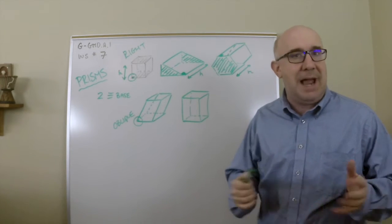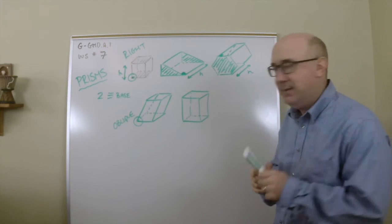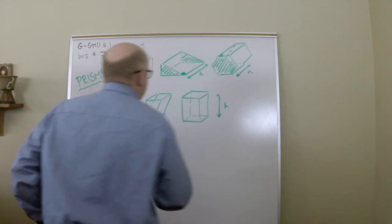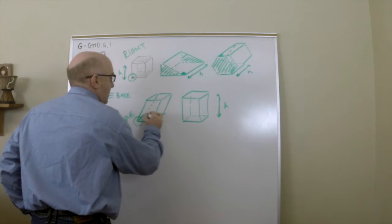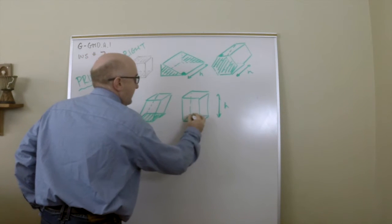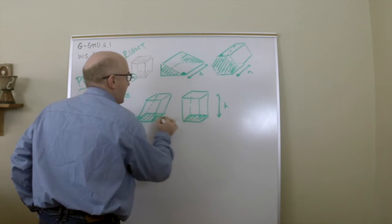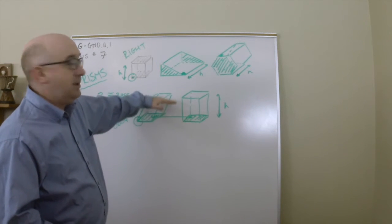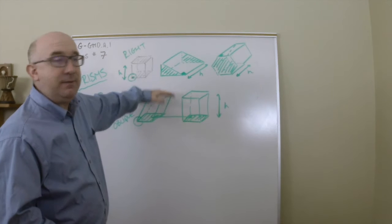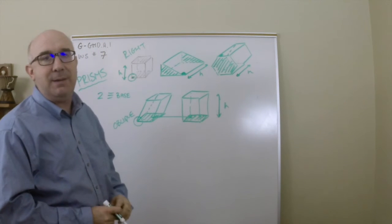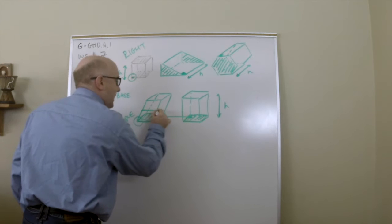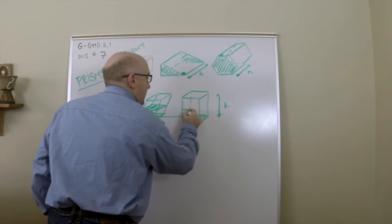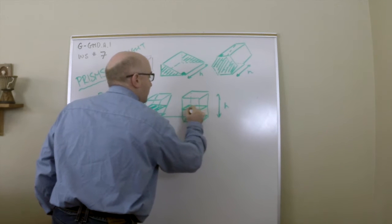Now Cavalieri came along and said, let's talk about how we compare these kinds of things. He said the volumes of these two prisms will actually be equal when they have the same height and the cross sections have the same area. So if these two here had the same area and you stack them continuously having the same area for the same amount of height, you get the same amount of volume.